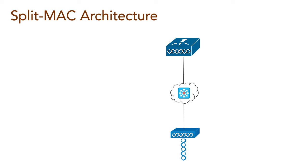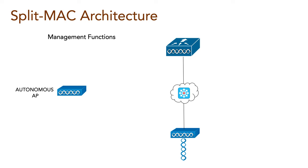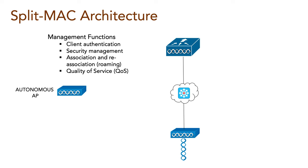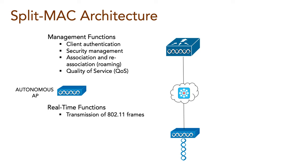In the SplitMAC concept, what an autonomous access point traditionally would do by itself is broken into two functions: management functions such as client authentication, security management, association and re-association or roaming, and quality of service; and real-time functions like transmission of 802.11 frames, MAC management, and encryption.